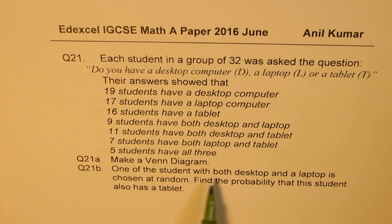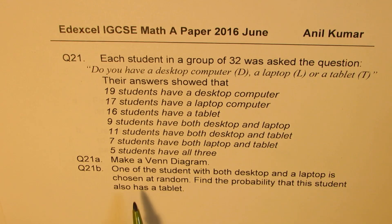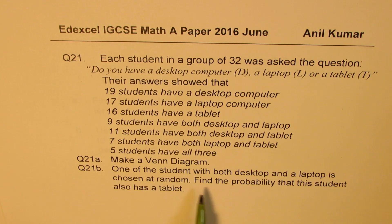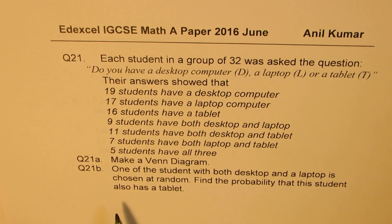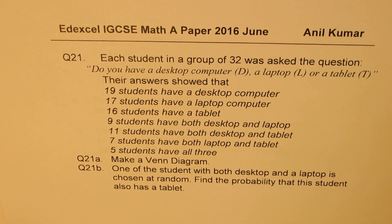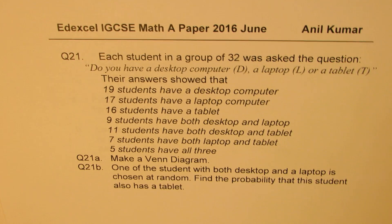The questions for you are: first, make a Venn diagram (part 21A), and for part 21B, one of the students with both a desktop and a laptop is chosen at random — find the probability that this student also has a tablet. You can pause the video, answer the question, and then look at my suggestions.